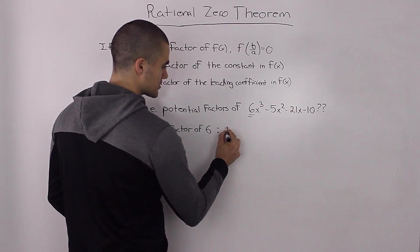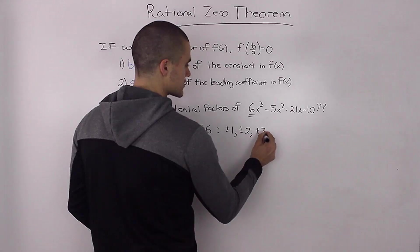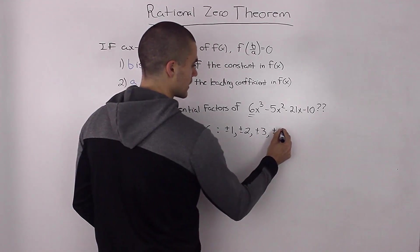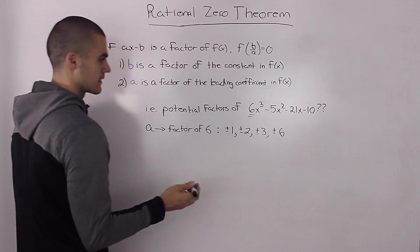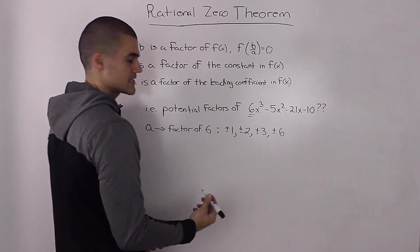What are potential factors of 6? What whole numbers? Well it could be either plus or minus 1, plus or minus 2, plus or minus 3, or plus or minus 6. These are the whole numbers that are factors of the leading coefficient 6.